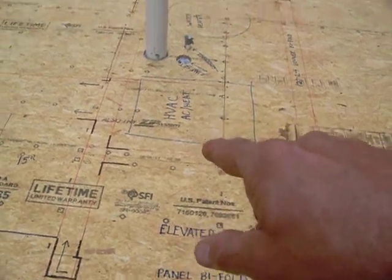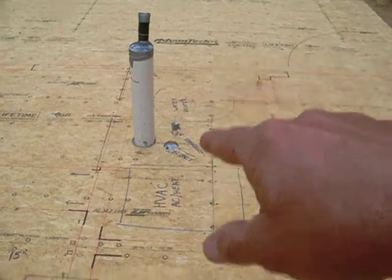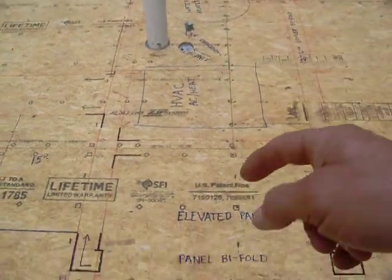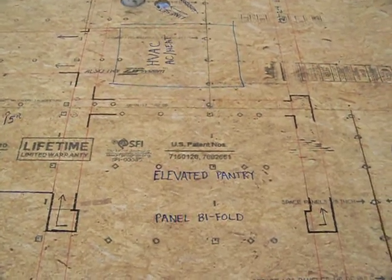An elevated pantry—envision something elevated maybe 30 inches before my pantry starts—because underneath this, over here in my closet where my HVAC and water heater is going to go, I'm actually going to have my return air come underneath this pantry, like a return air right at the floor line.